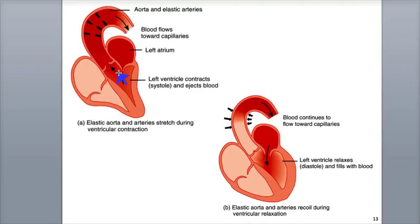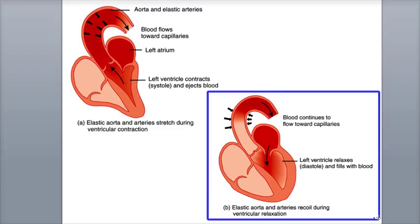When blood is ejected out of the ventricles, it first flows through the elastic arteries, which can handle this high-pressure blood. The walls of these arteries are able to stretch, and their elastic fibers can temporarily store mechanical energy as potential energy — acting as a pressure reservoir. When the elastic fibers recoil, the potential energy is converted into the blood's kinetic energy, helping propel blood through the arteries after the ventricles have finished contracting.